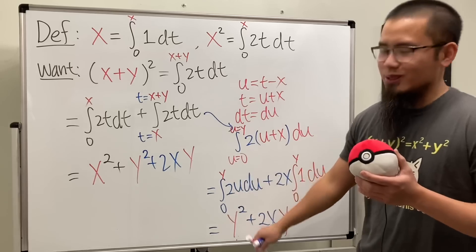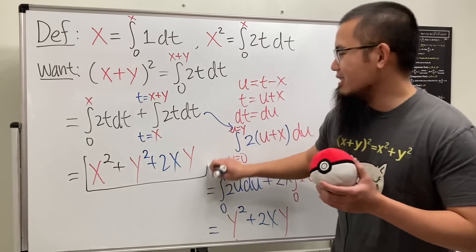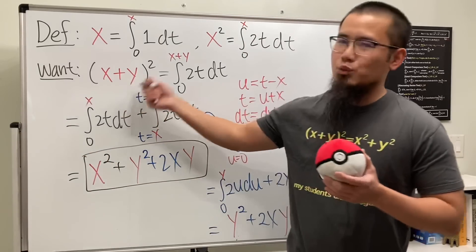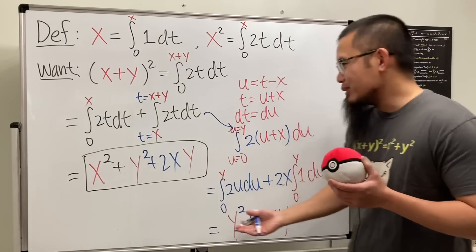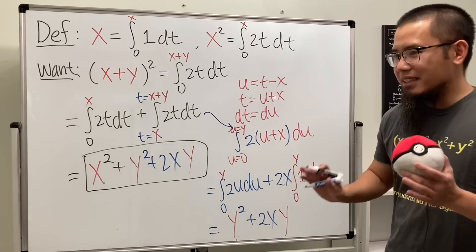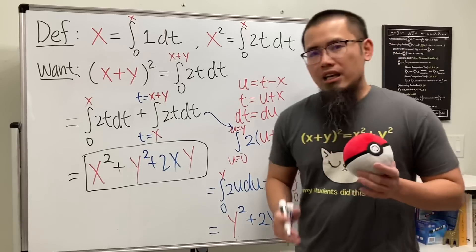And of course, we should know that this right here is indeed the answer x²+2xy+y². So, that's how you do it. With calculus, not the algebra FOIL method.